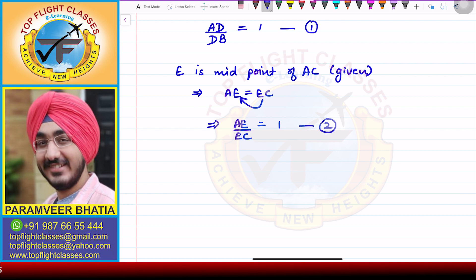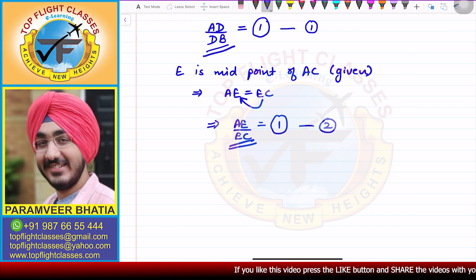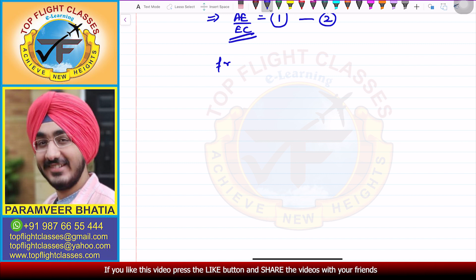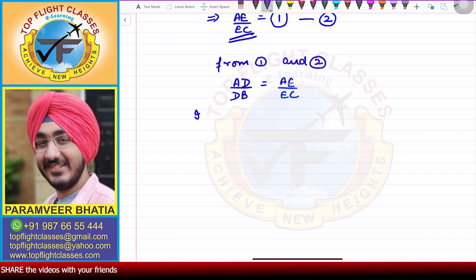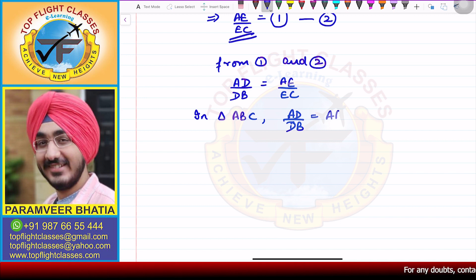Now, looking at the second equation: since E is the midpoint of AC, AE is equal to EC, so AE/EC is also equal to 1. That means both ratios are equal to 1. So from equations 1 and 2, we get that AD/DB is equal to AE/EC. This is proved above.